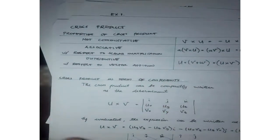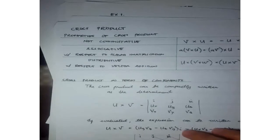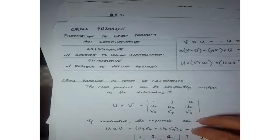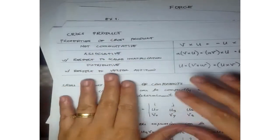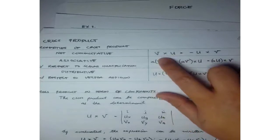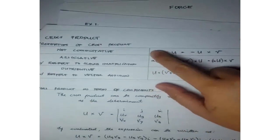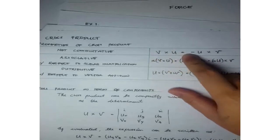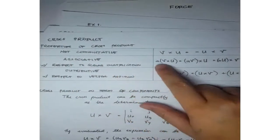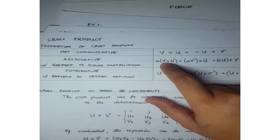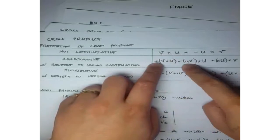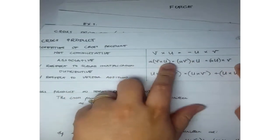The cross product, also known as the vector product, has properties stated in this table. First, it is not commutative — mathematically, V cross U is equal to negative U cross V. It is also associative with respect to scalar multiplication: scalar A times (V cross U) equals AV cross U, or A times U cross V.